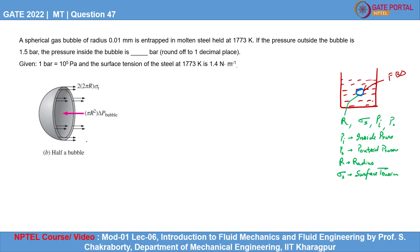Looking at the free body diagram of this bubble — taking half the bubble — you can see there are two surfaces: an inside surface and an outside surface. This is the ideal case where both surfaces are in touch with air, giving two circumferences and two times the surface energy. But in our case, the outside surface of the bubble is not in touch with air because the bubble is entrapped in molten steel, so we consider only one surface — the inside surface.